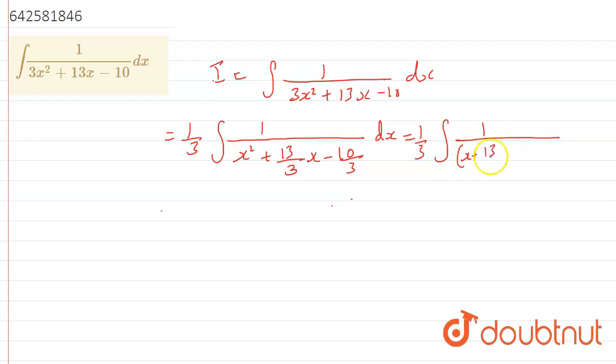(x + 13/6)² - (17/6)² dx. Okay, now when we solve this we are